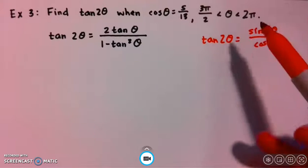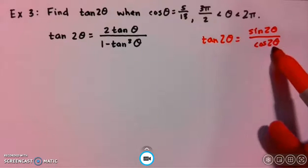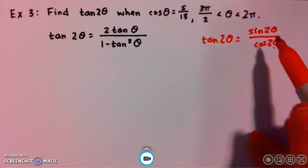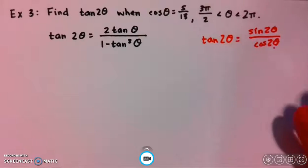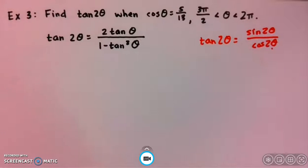This still applies. Because in the past two examples, we actually did find the value of sine 2 theta and cosine 2 theta, you could just plug in those values in the numerator and denominator, simplify, and you would have the answer. But let's solve this problem as if we had none of that information. You won't always have the same information and be asked to find all three trig functions.